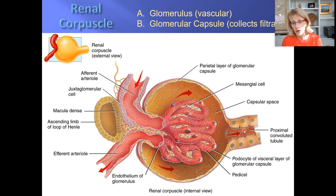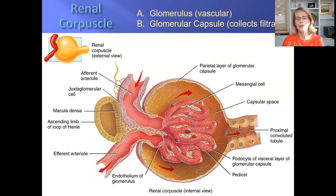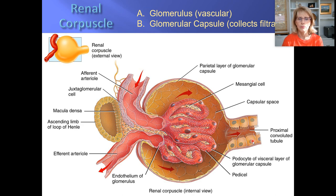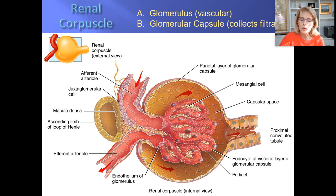The filtrate is then sent into the beginning of the proximal convoluted tubule. Notice that the artist has drawn this with simple cuboidal epithelial cells — we'll be talking about those in detail shortly. The proximal convoluted tubule is very long and convoluted. The structure we're looking at is called the renal corpuscle. Bowman's capsule, also called the glomerular capsule, has a parietal layer, and its visceral layer is made out of specialized squamous epithelial cells known as podocytes.